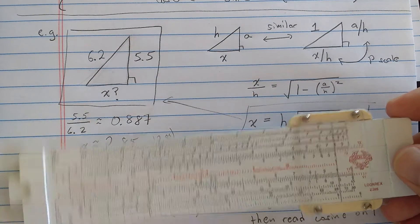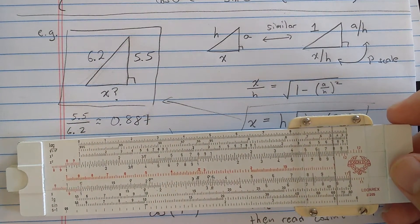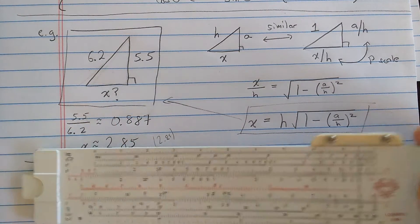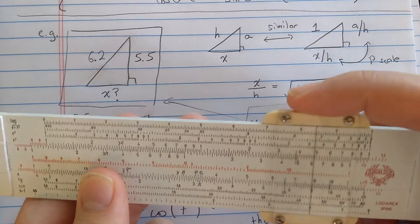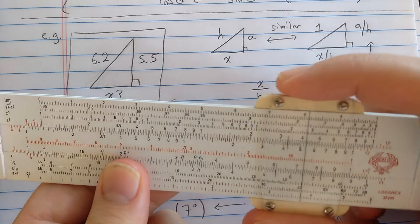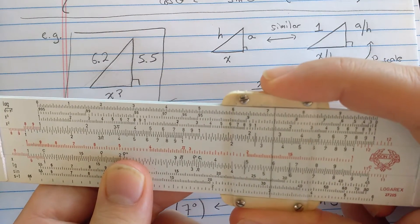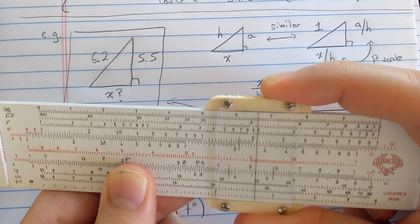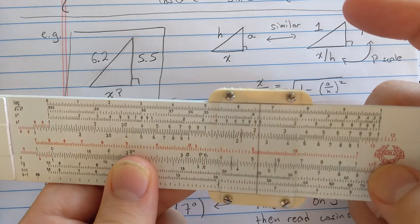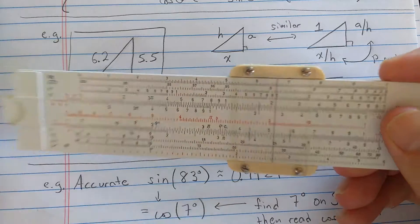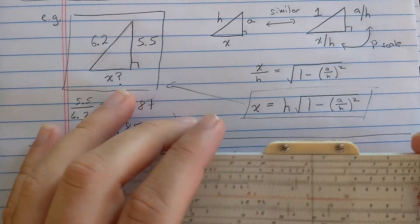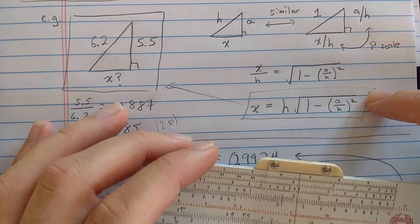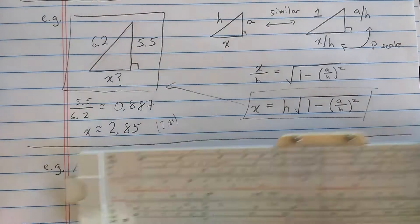Let's try it here. The first thing I need to compute is this a over h. So let's compute that 5.5 here on the D scale. I'll find the 5.5. I'm going to divide by 6.2, so I'm aligning that on the C scale, reading the result at the index, and I've estimated that to be 0.887. So here's an example of a slide rule calculation where I'm going to have to transfer a number somewhere. I can't just leave the result on the cursor. So I'm going to transfer that 0.887 to the P scale, the second scale from the top.